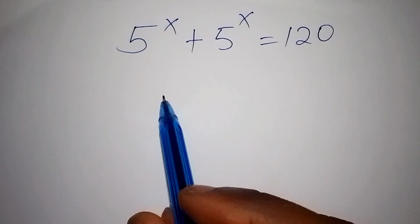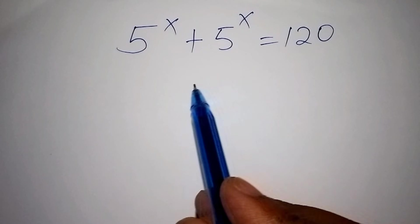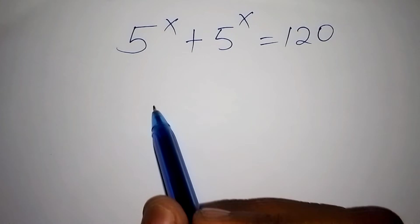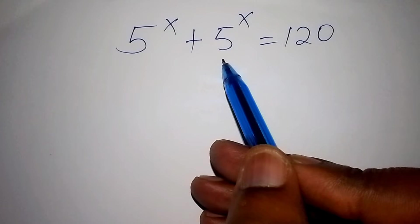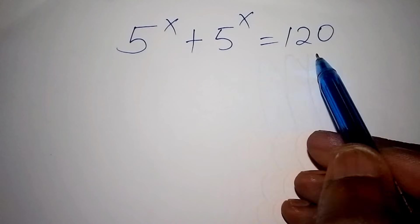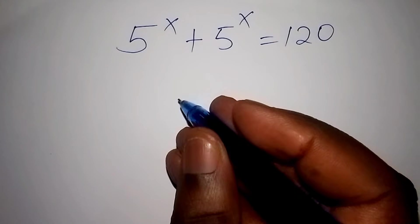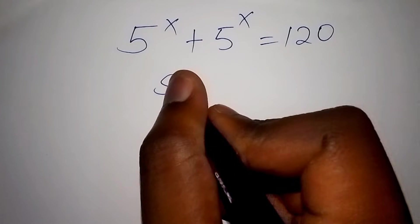Hello viewers, welcome. We will work out this math problem within the shortest time possible. We have 5 to the power of x plus 5 to the power of x equals 120, and we are asked to find the value of x. Let us start with the solution.